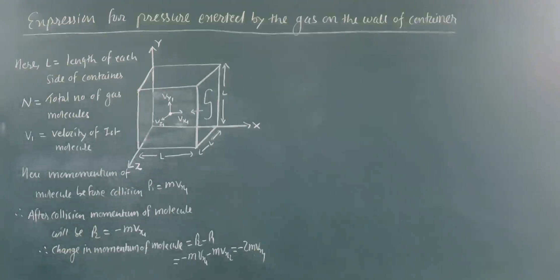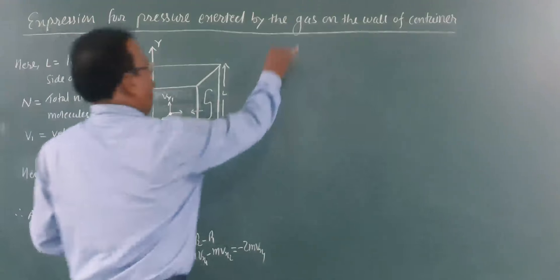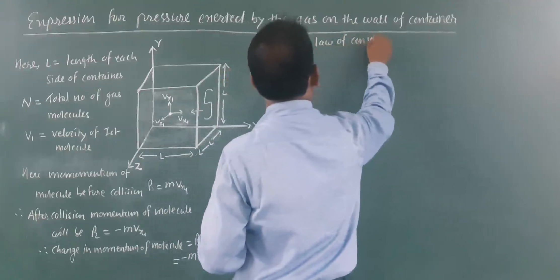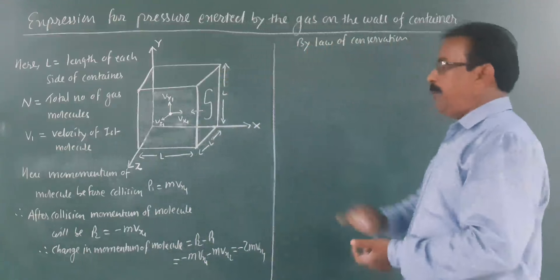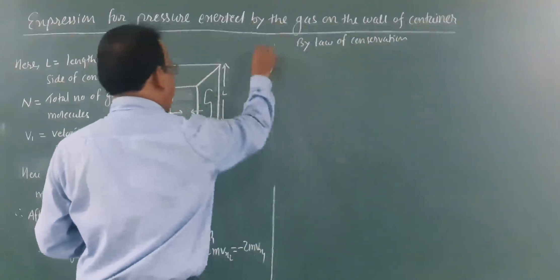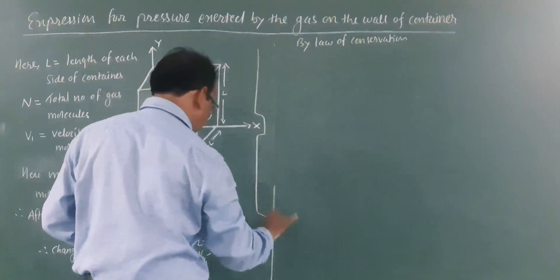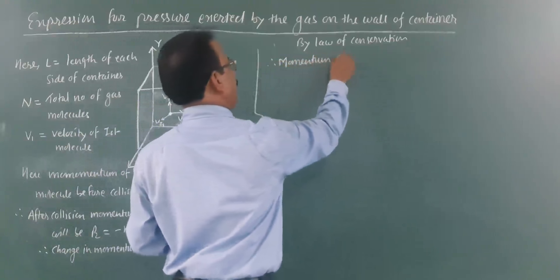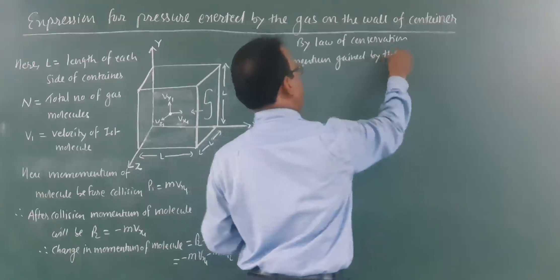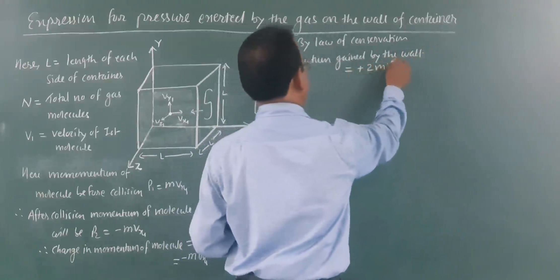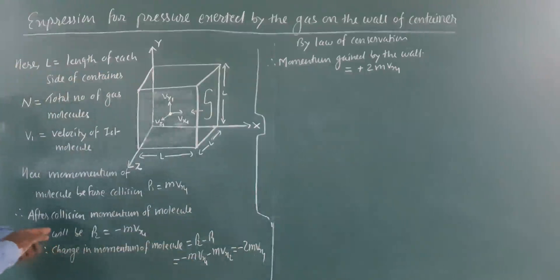This change in momentum is experienced by the molecule. By the law of conservation of momentum, an equal amount of momentum will be gained by wall S. Therefore, the momentum gained by wall S equals +2mVx1. This is the momentum gained by wall S due to a single molecule.